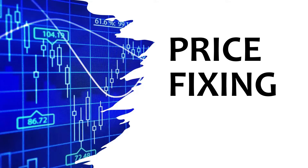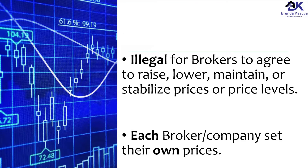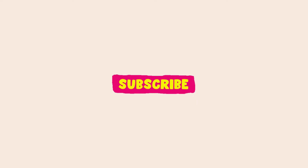The first violation is price fixing. This is where brokers or companies come together and set prices — saying we all need to raise our prices to this amount or reduce to this amount. That is illegal. However, each broker can set their own prices independently. Company pink can decide their minimum compensation, and company green can set something different. What's illegal is where these two companies come together to set the price. Commission is negotiable between client and broker, and price fixing makes it appear as if the price is the same throughout different brokerages.